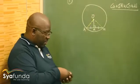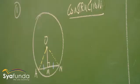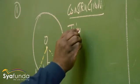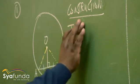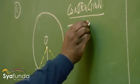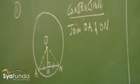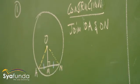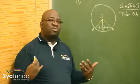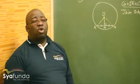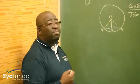Remember what it is that we constructed: we joined lines OA and ON. Now once I joined those two lines, I can see two triangles. This takes me back to when I was learning about congruency. Your congruency becomes important. The idea here is to take this triangle and compare it to this other triangle and prove congruency.